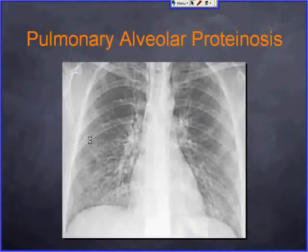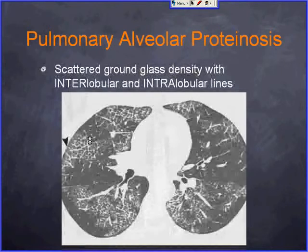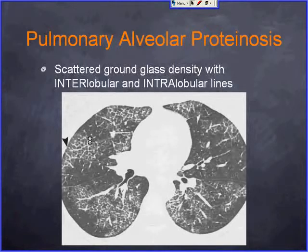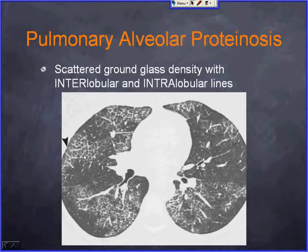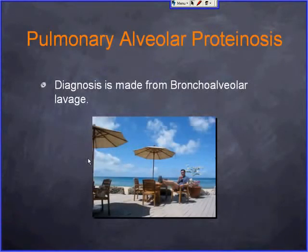On high-resolution CT, there is scattered ground glass opacity, which in this example is slightly less prominent compared to the interlobular and intralobular septal lines. You can appreciate all the interlobular septal thickenings with underlying intralobular lines within the secondary pulmonary lobules. It is a diagnosis impossible to make radiologically, so you can let the respirologist do the BAL and make the diagnosis.